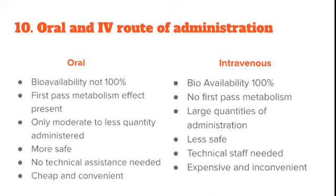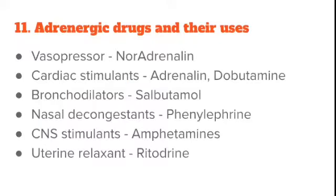For list-down questions, list the points and optionally add two to three lines under each. Question 11 asks for adrenergic drugs and their uses. Adrenergic drugs are used as vasopressors — example: noradrenaline; as cardiac stimulants — examples: adrenaline and dobutamine; as bronchodilators — example: salbutamol; as nasal decongestants — example: phenylephrine; as CNS stimulants — example: amphetamines; and as uterine relaxants — example: ritodrine.